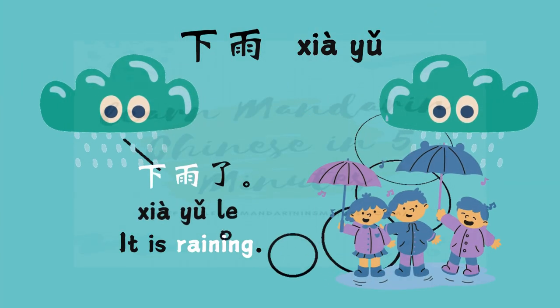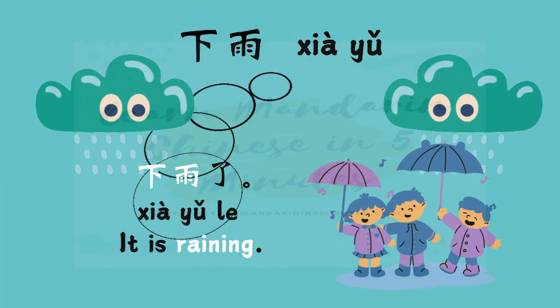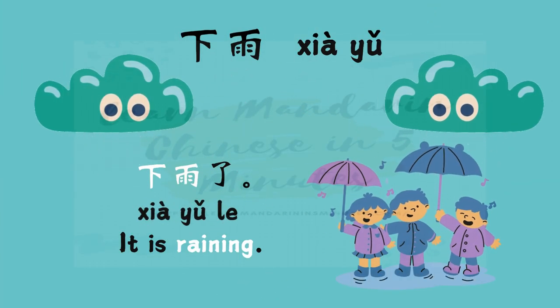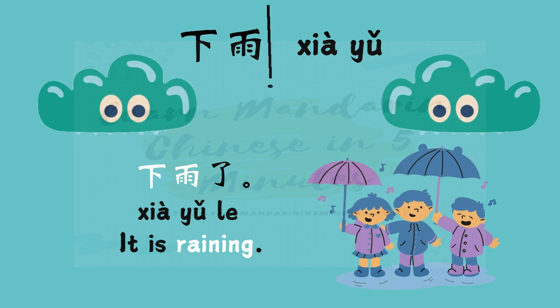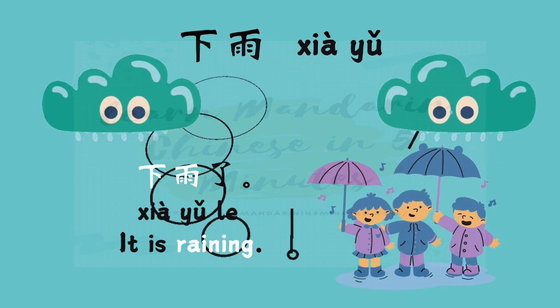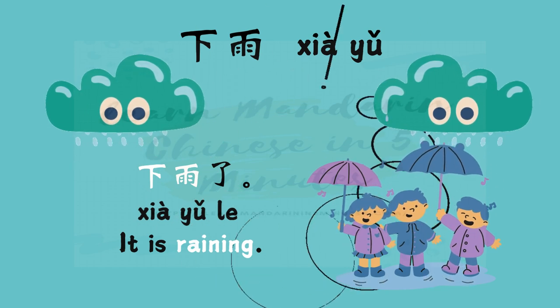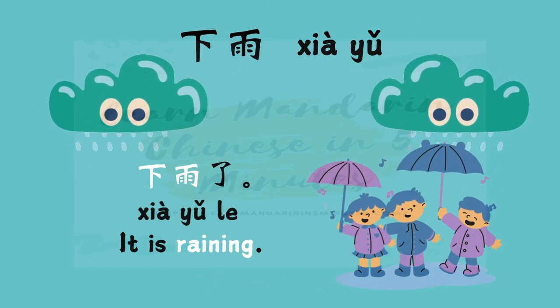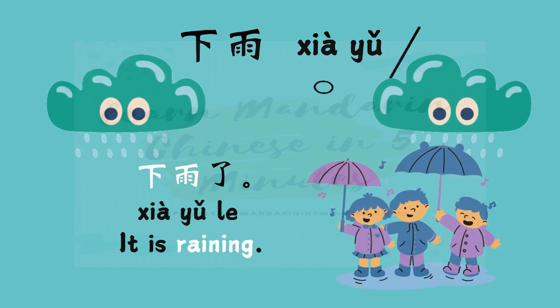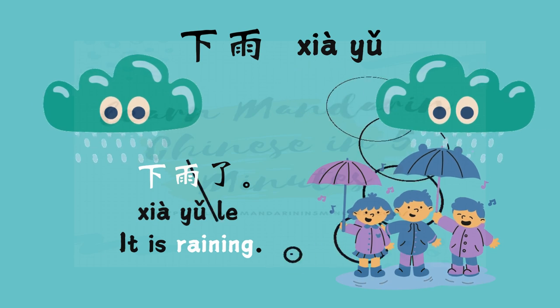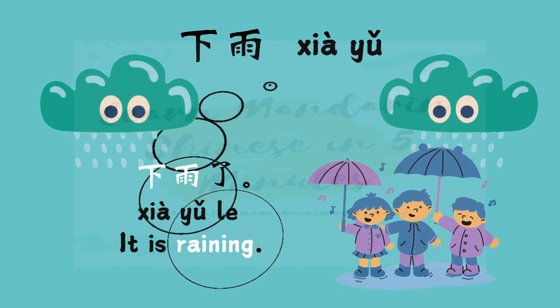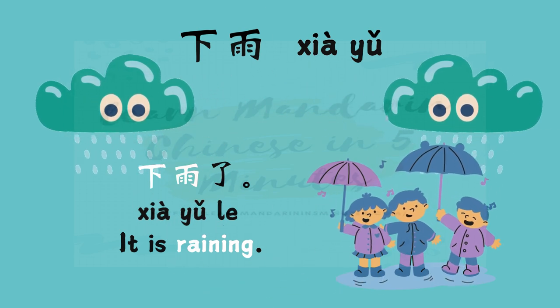Whenever you hear 下雨了, you know it means it's raining. 雨 means rain. Super useful when talking about the weather.